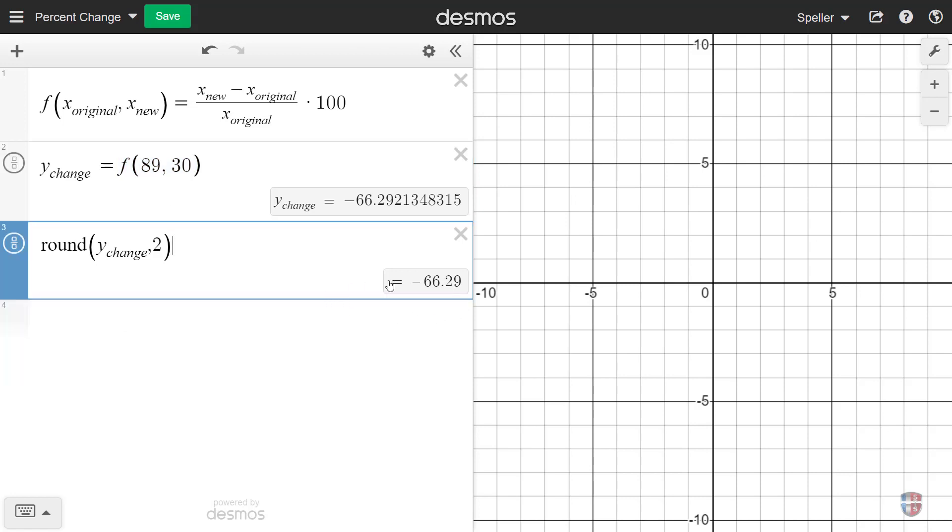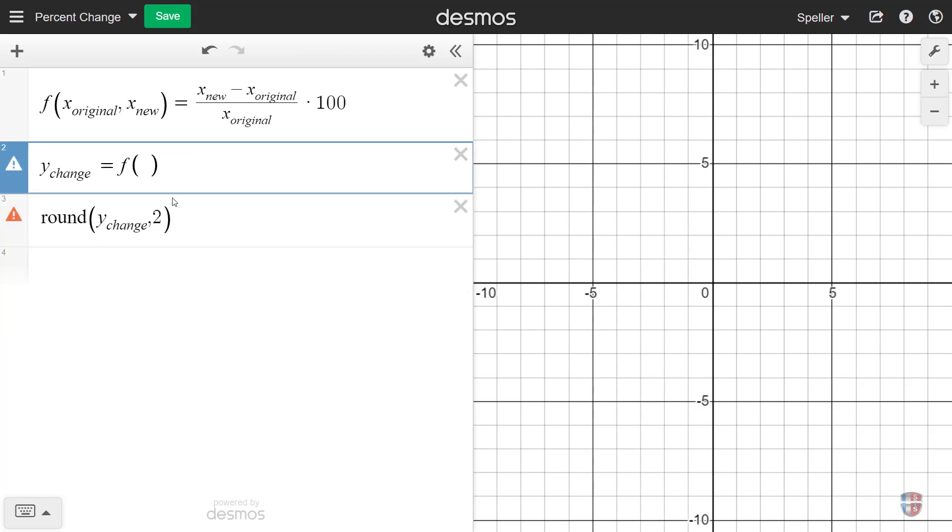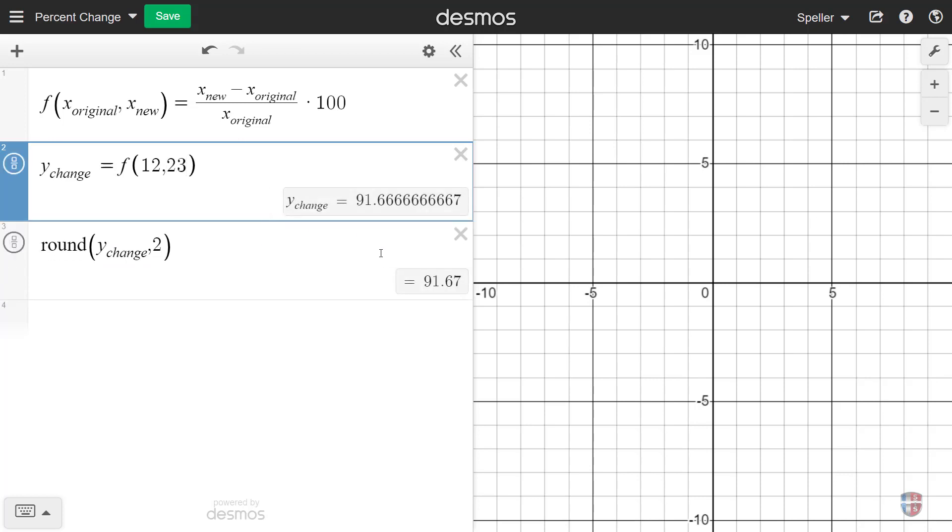But now we have something that's allowing us to do the rounding every time. So let's go back and redo a few of those examples. One of the examples was starting off with five and an increase to seven. We see that it stayed at 40. The other one we did was 12 increasing to 23, and we see that's 91.67 percent.